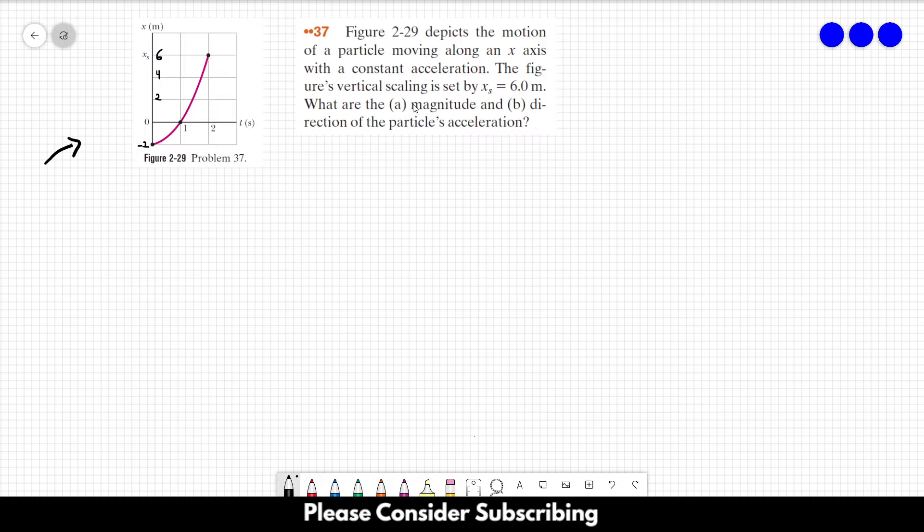What are the magnitude and direction of the particle's acceleration? Since the acceleration is constant, there are 3 different equations that we can use. They are x equals x_0 plus v_0 t plus a t squared over 2. We can also use v equals v_0 plus a t and v squared equals v_0 squared plus 2 times a delta x.